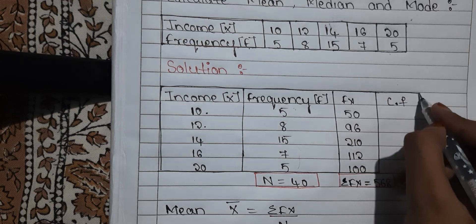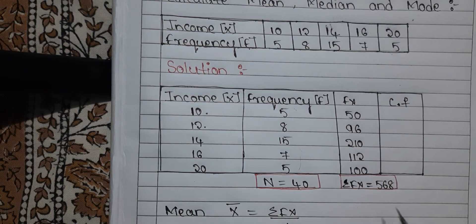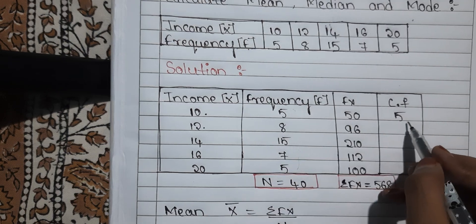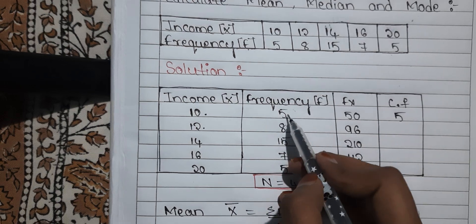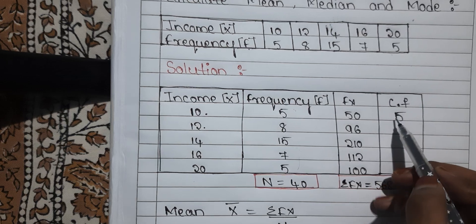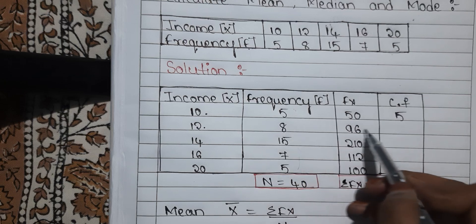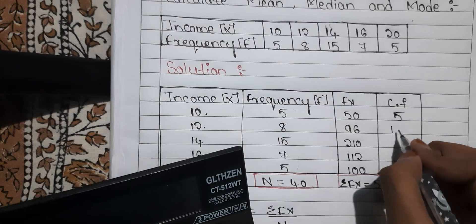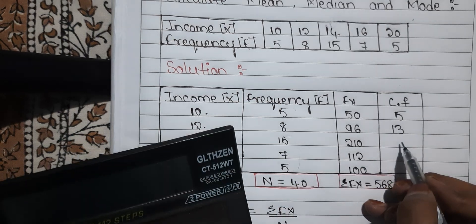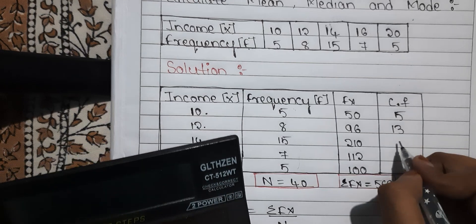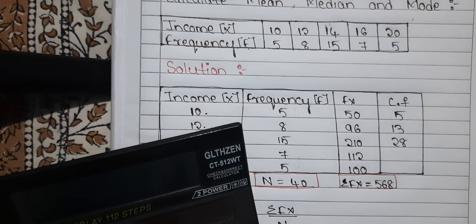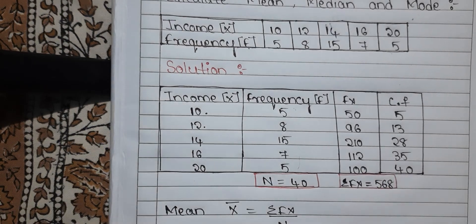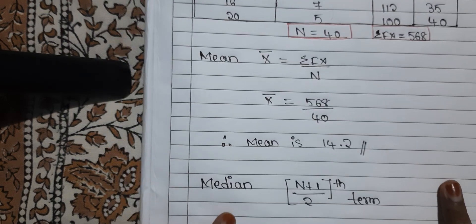Let us find cumulative frequency. The first frequency, whatever it is, you take it as it is — here it is 5. Then you add this cumulative frequency with the next frequency to get the new cumulative frequency. 5 + 8 = 13. Then 13 + 15 = 28. Then 28 + 7 = 35. Then 35 + 5 = 40. So this is our cumulative frequency column.